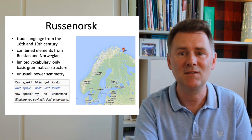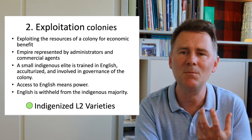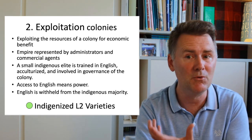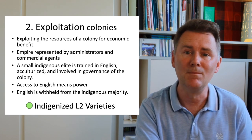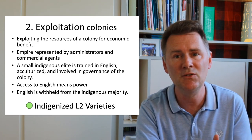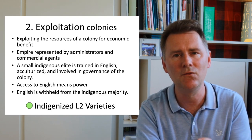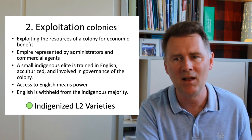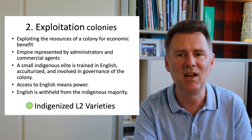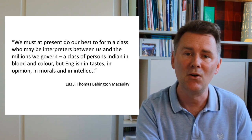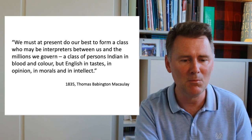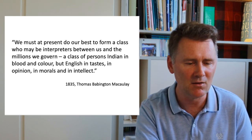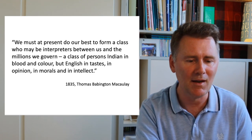Power asymmetries are evident in exploitation colonies, which are exploited by the metropolis for economic benefit. The empire is represented by administrators and commercial agents — the British East India Company being a prime example. Linguistically, the language of the colonizers is introduced to a small indigenous elite trained and involved in the governance of the colony. Access to English is access to power, and that access is strategically withheld from the vast majority. This strategy is captured in a quotation by British MP Thomas Babington Macaulay: 'We must at present do our best to form a class who may be interpreters between us and the millions we govern — a class of persons Indian in blood and color, but English in tastes, in opinion, in morals and in intellect.'